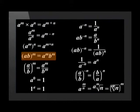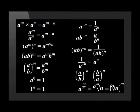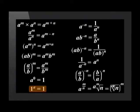ab in brackets to the power of m is equal to a to the power of m times b to the power of m. a over b in brackets to the power of m is equal to a to the power of m over b to the power of m. a to the power of 0 is equal to 1. 1 to the power of a is equal to 1.